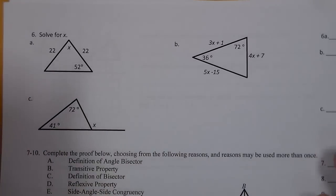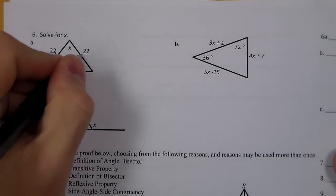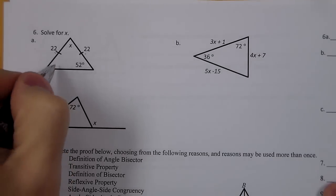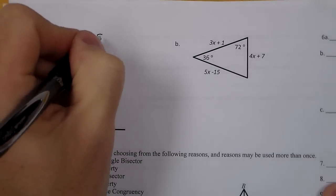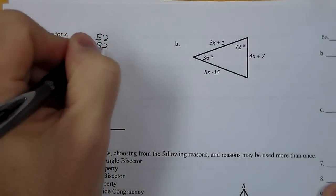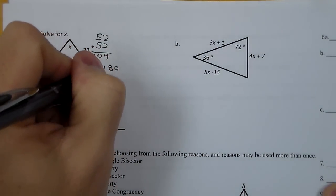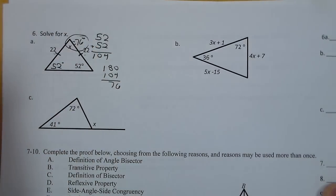For number six, first thing I notice here is I have two sides that are the same. So that means this triangle is isosceles. That's really all I need those side lengths for. Because really, the problem is going to focus on angles. So if it's isosceles, I know both of these angles are 52 degrees. Together, I have 104. I subtract, and I have 76 degrees.